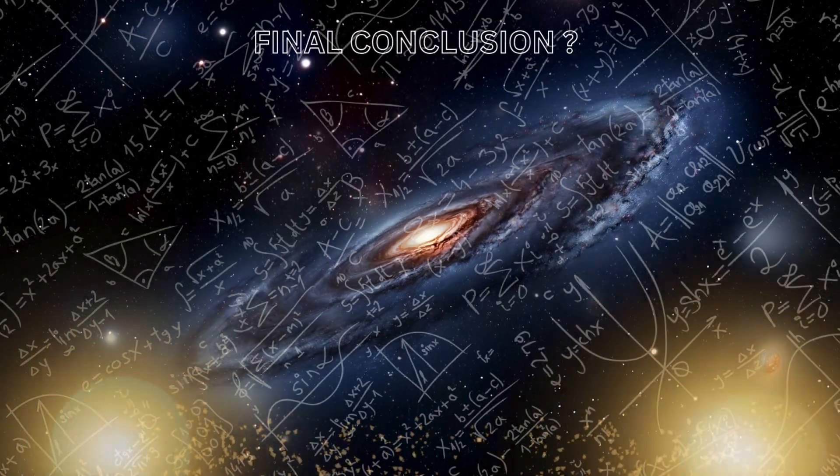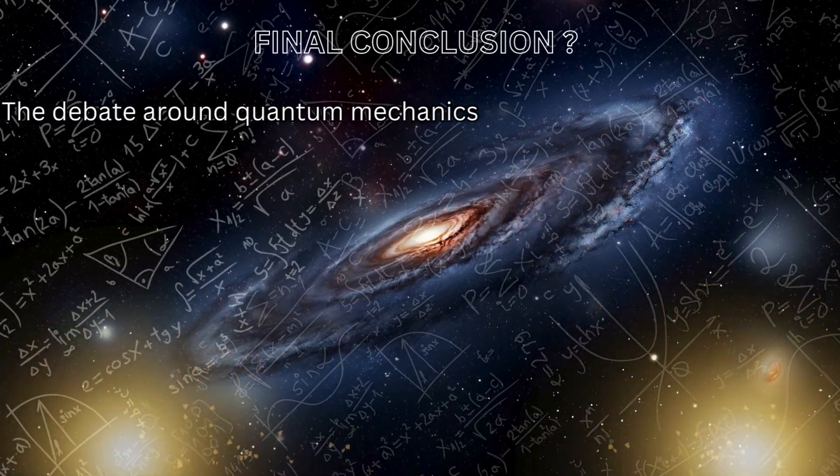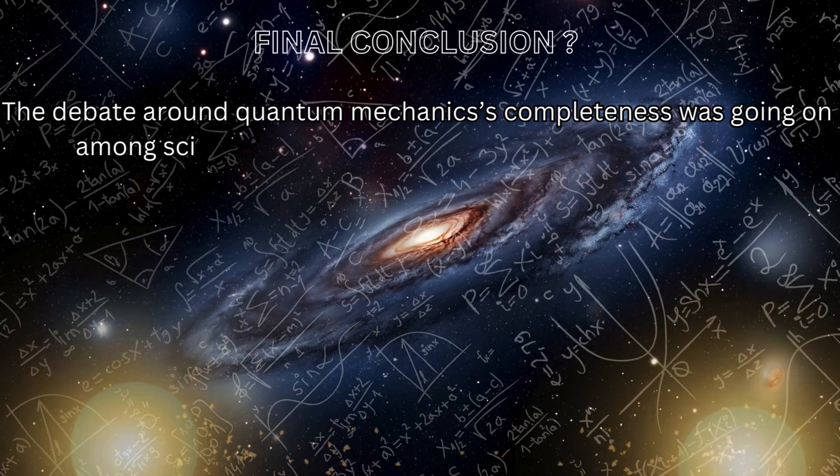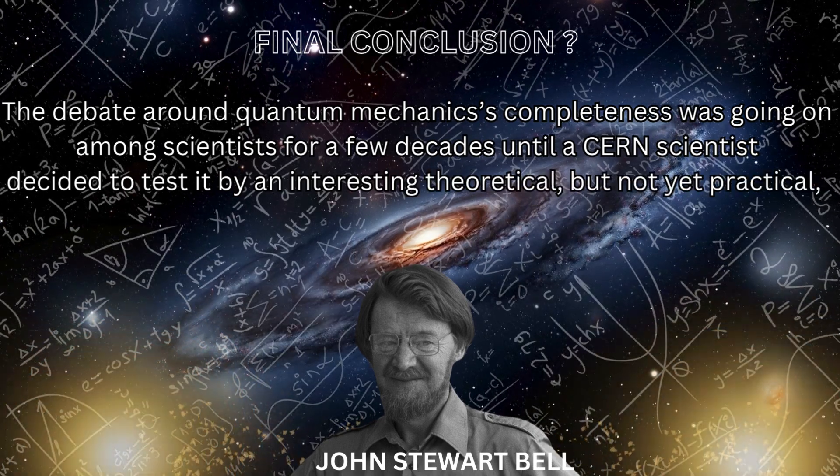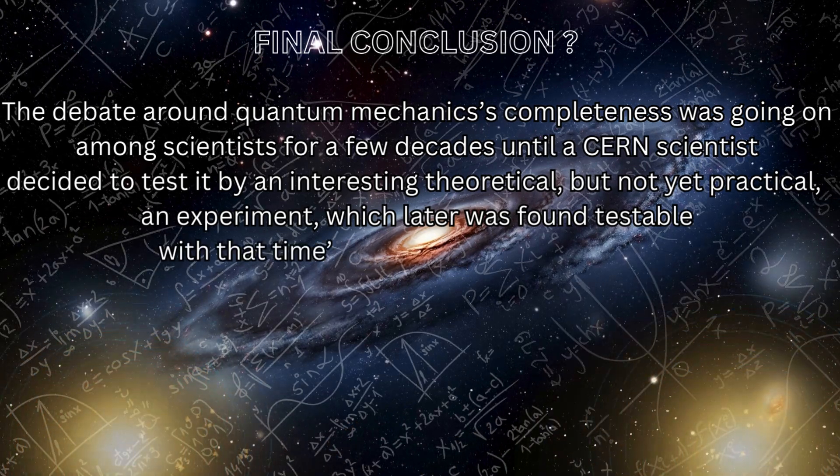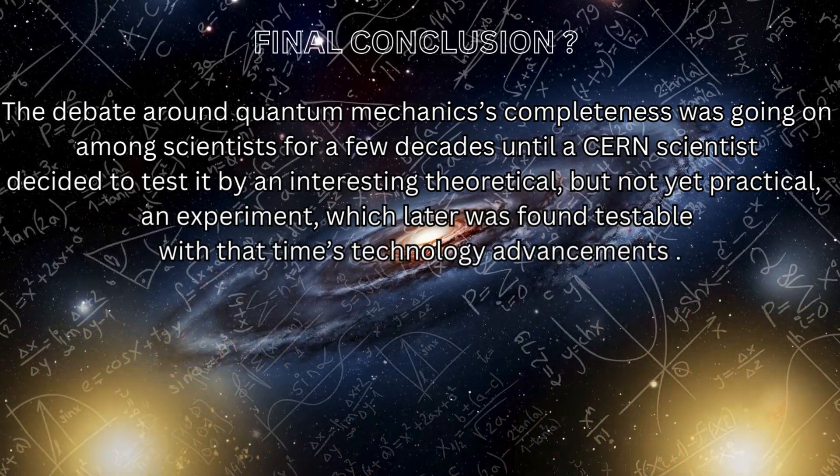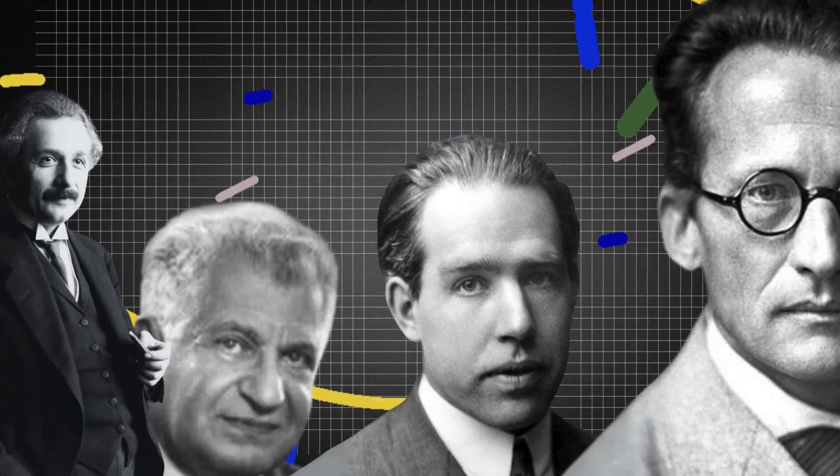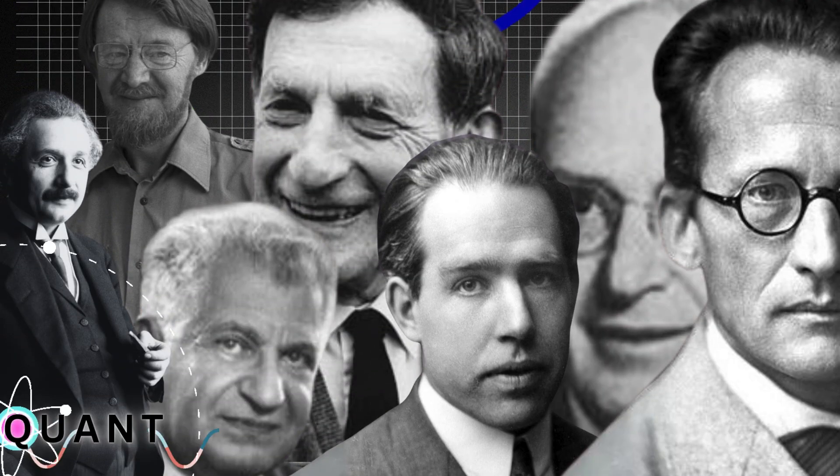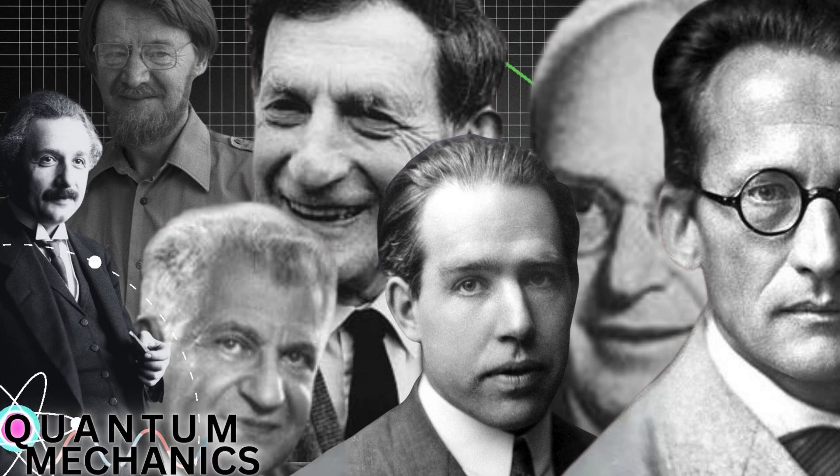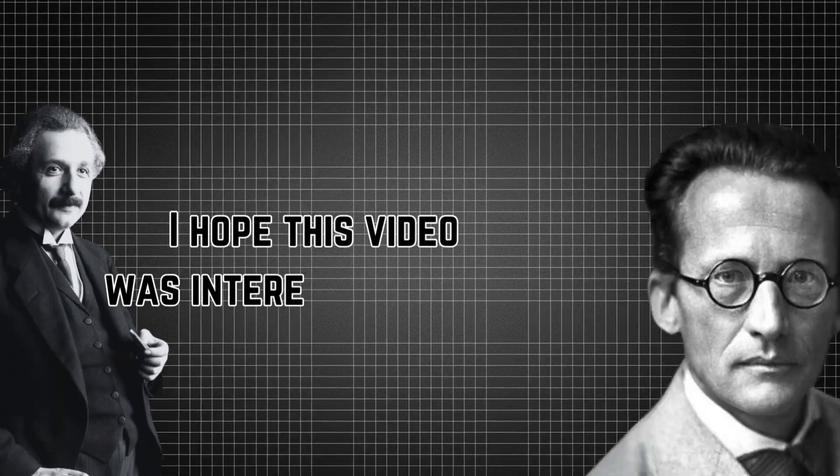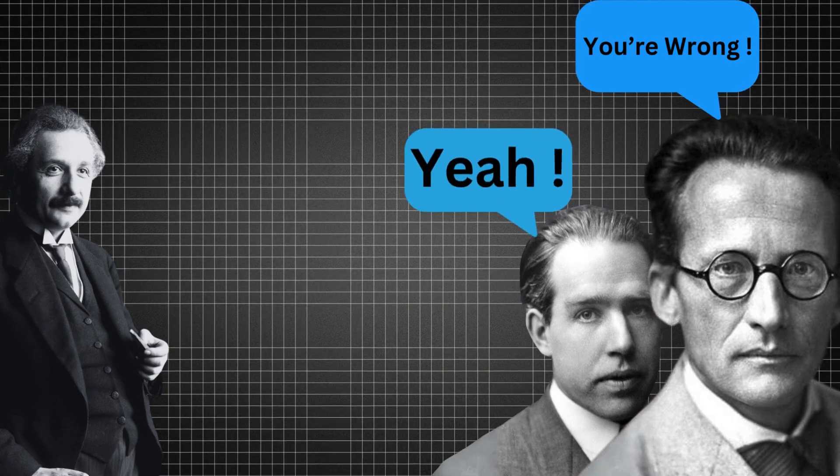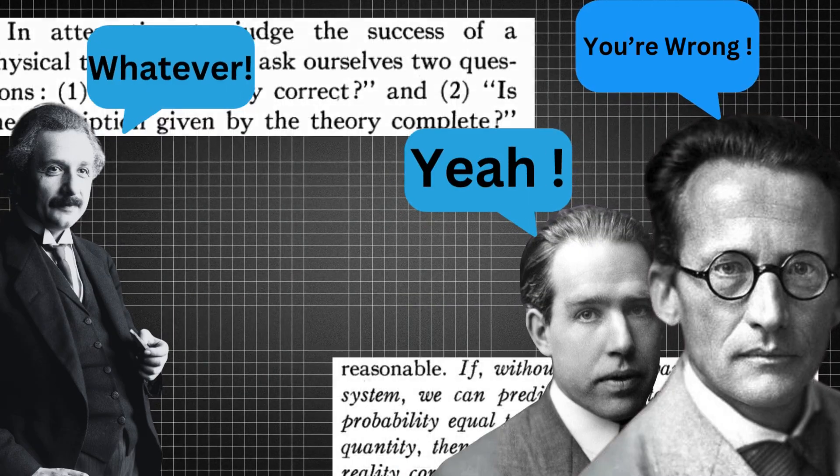So what's the final conclusion? The debate around quantum mechanics completeness was going on among scientists for a few decades, until a CERN scientist decided to test it by an interesting theoretical, but not yet practical, experiment, which later was found testable with that time's technology advancements. There are stories left after these events that solidified the future of quantum mechanics. But that's for another upcoming video, as there is so much to talk about. I hope this video was interesting enough showcasing the starting battles of quantum mechanics in its beginning time in the early 1930s.